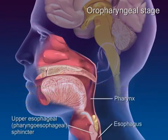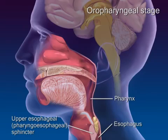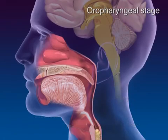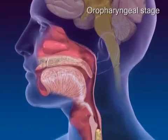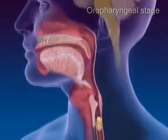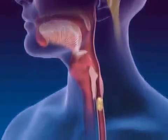As the upper esophageal sphincter relaxes, pharyngeal contractions drive the bolus into the esophagus. The oropharyngeal stage is done and breathing resumes.